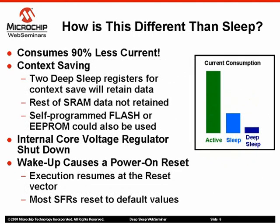Deep sleep reduces current to minimum levels by turning off power to most of the chip's SRAM, cutting current consumption to 90% less than traditional sleep mode. While SRAM does not retain its data when powered down, there are two general purpose deep sleep registers that will remain powered, allowing some context data to be retained easily. If more data needs to be saved, self-programmed flash or EEPROM memory, if available, is also an option.